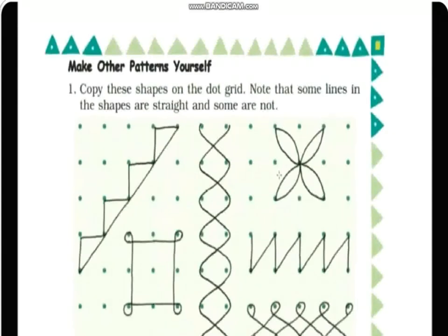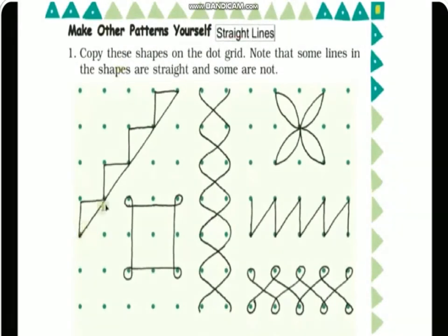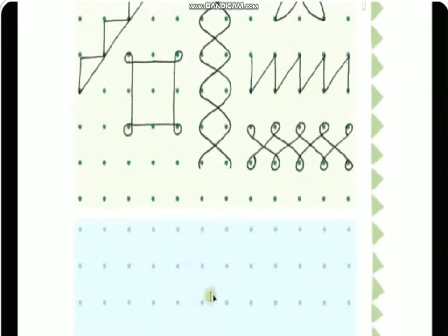Now let's move to the next topic: make other patterns yourself by copying these shapes onto the dot grid. Note that some lines in the shapes are straight and some are not. Here you can see one pattern with straight lines and another with curved lines. Can you identify where the curved lines are? Yes, this one is a curved line, and this one also has curved lines.